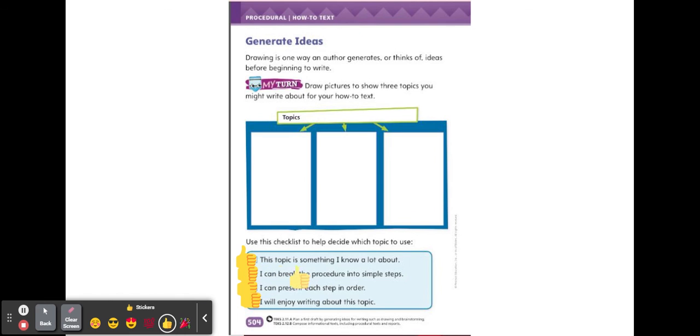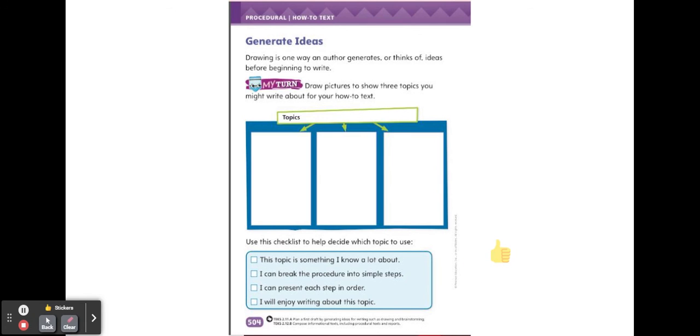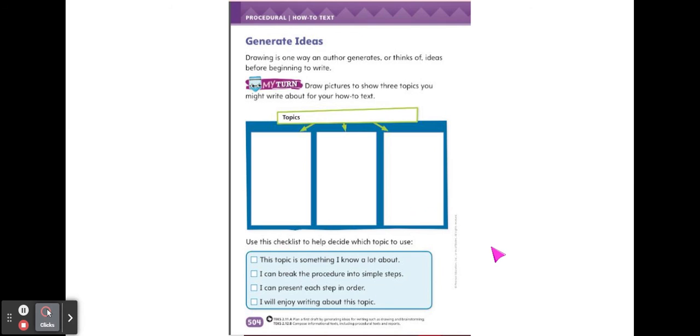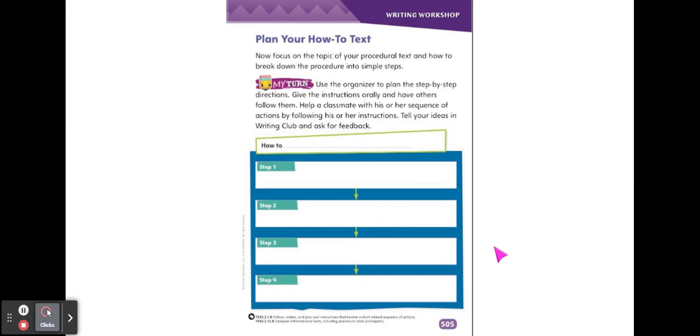So one more time, from the three topics that you have written or drawn, you're going to choose one to write about. Use the list to decide which topic you will write about. Go ahead and turn to page 505.